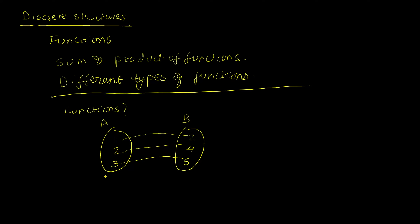This input space is also known as the domain, and this output space is also known as the co-domain. There's a range of values that the function maps to. Let's say set B also contained an element eight — eight is not mapped to anything in A. So there will often be a subset of the co-domain that is actually mapped to, and that subset is called the range.